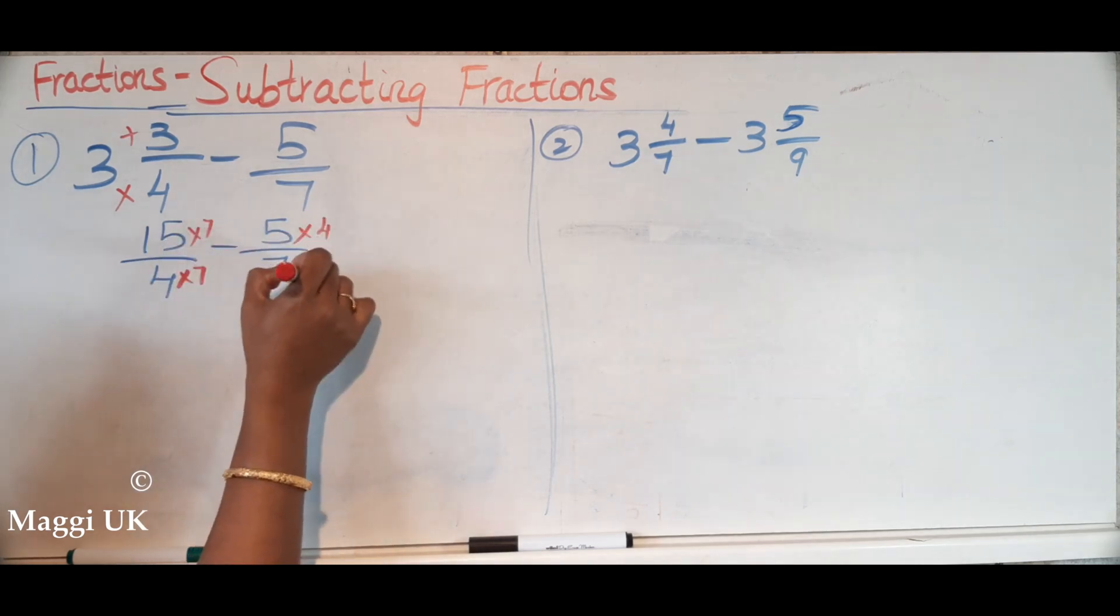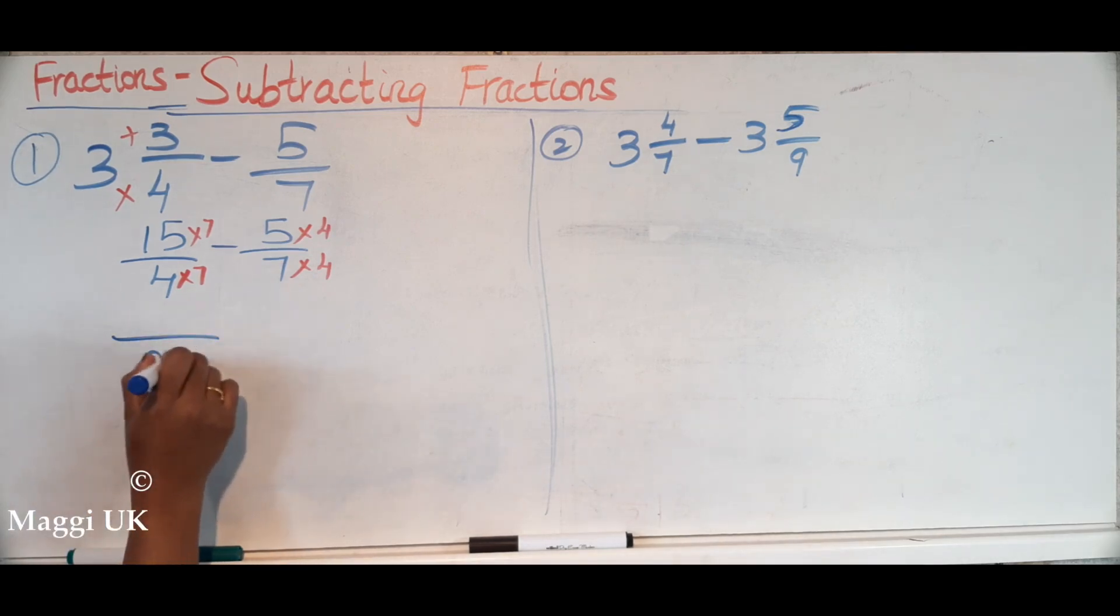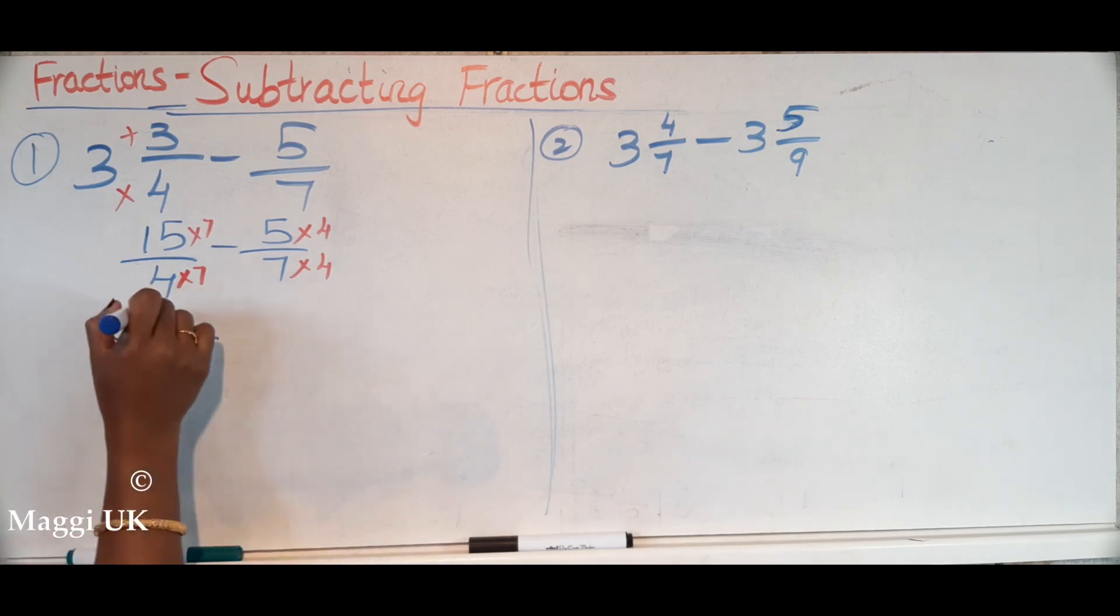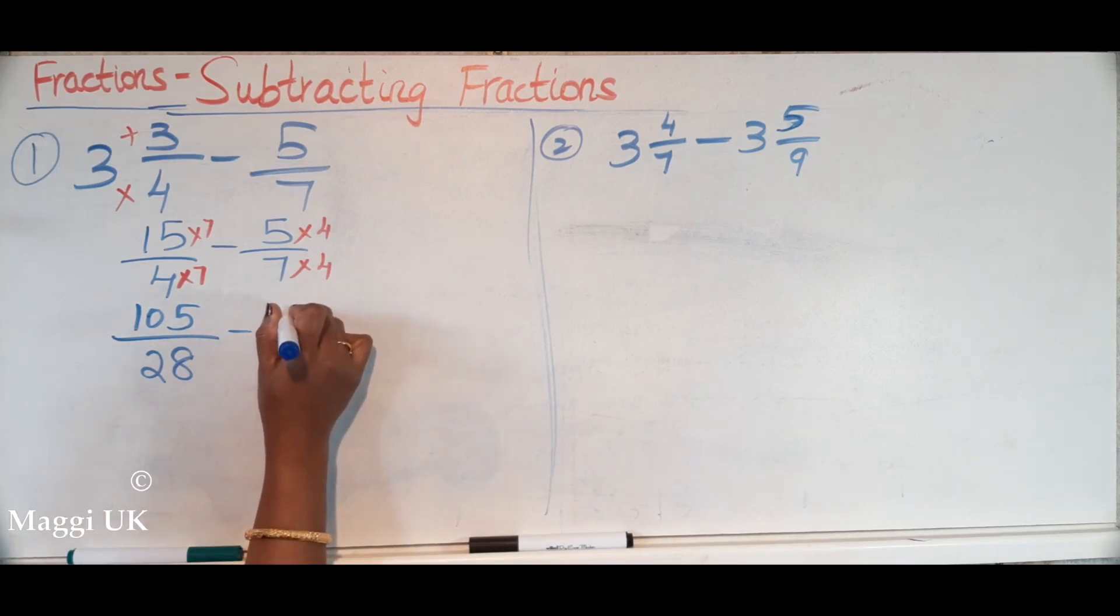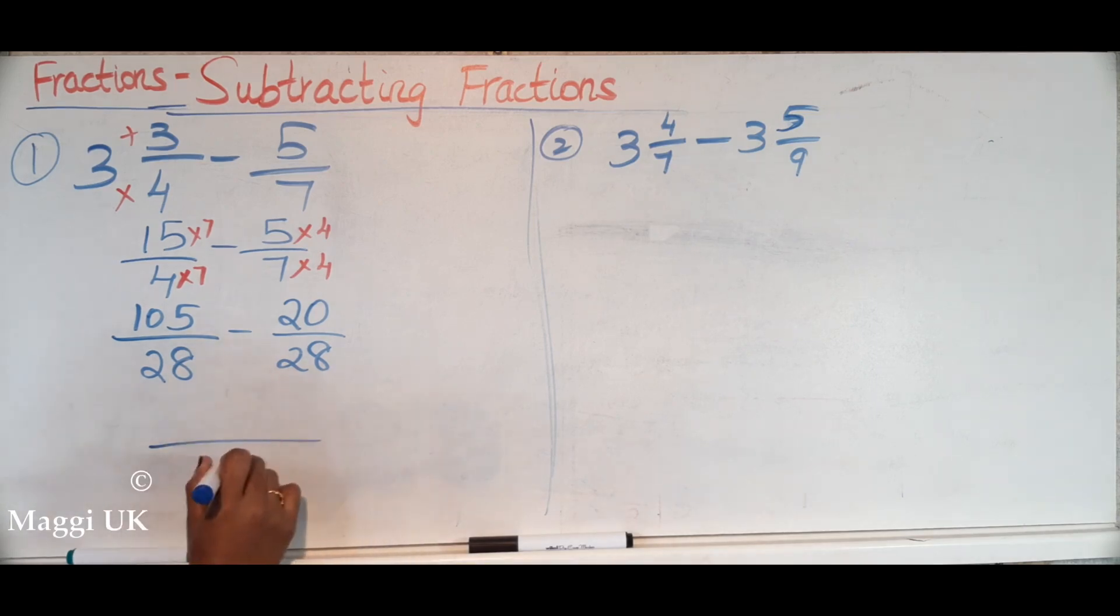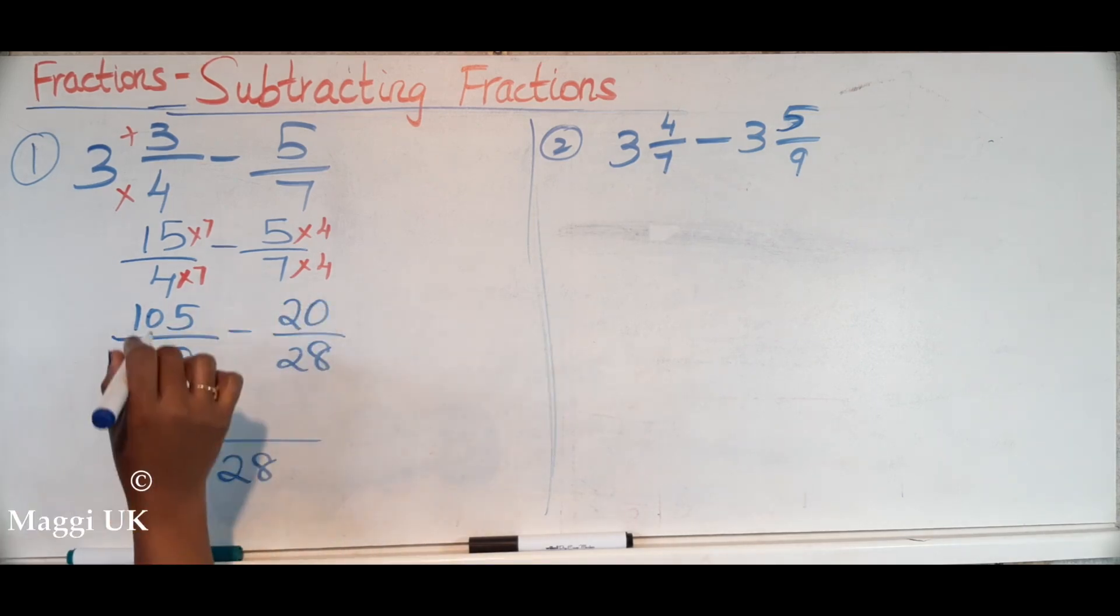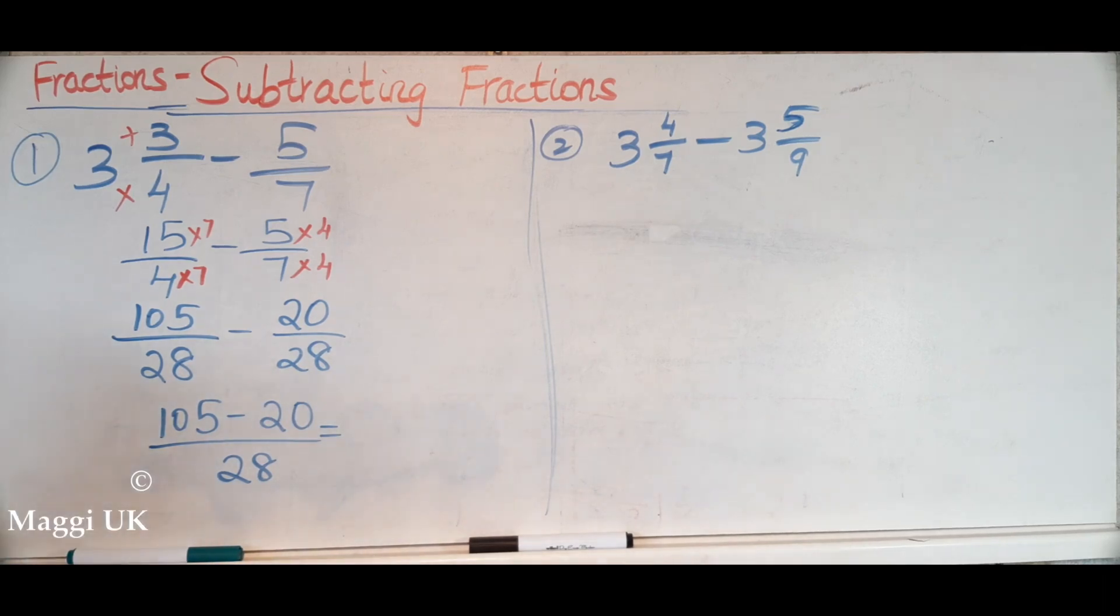And times this by 4 to bring your common denominator, which will be 28. 15 times 7 is 105. Very good, your multiplication is excellent. Yes, thank you. This one will be 20 over 28. So now if you see there's a common denominator, we just have to take away the top number, which is your numerator.